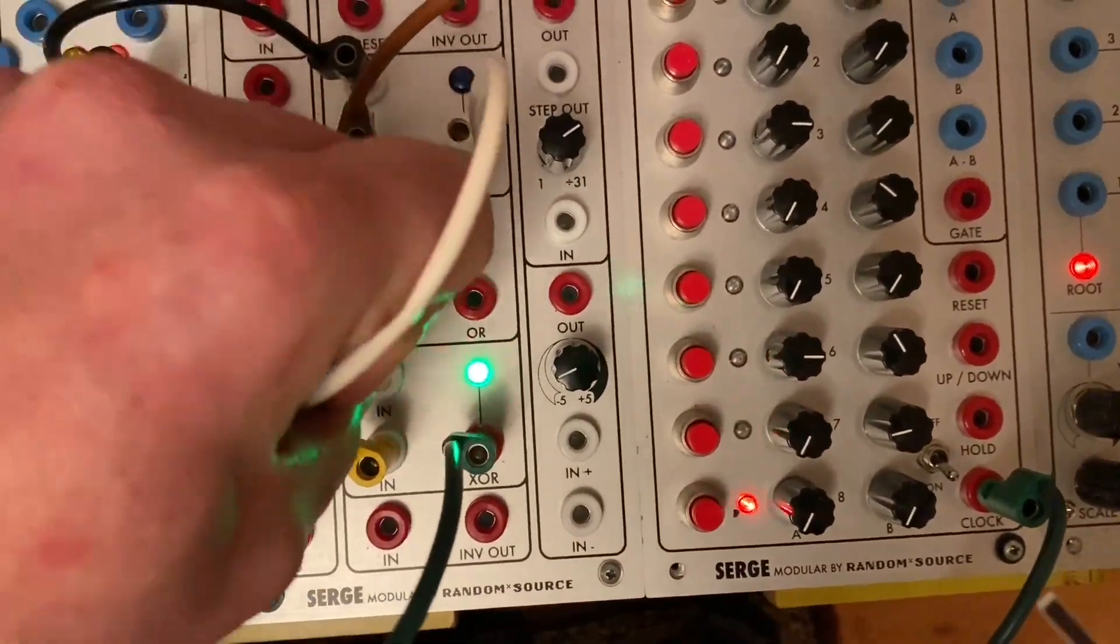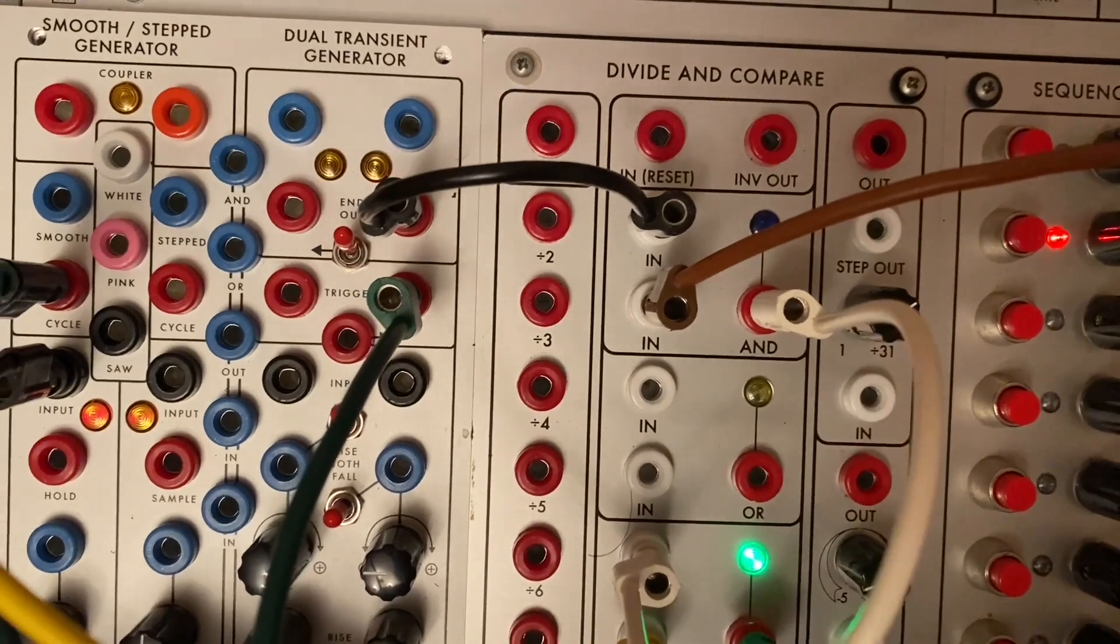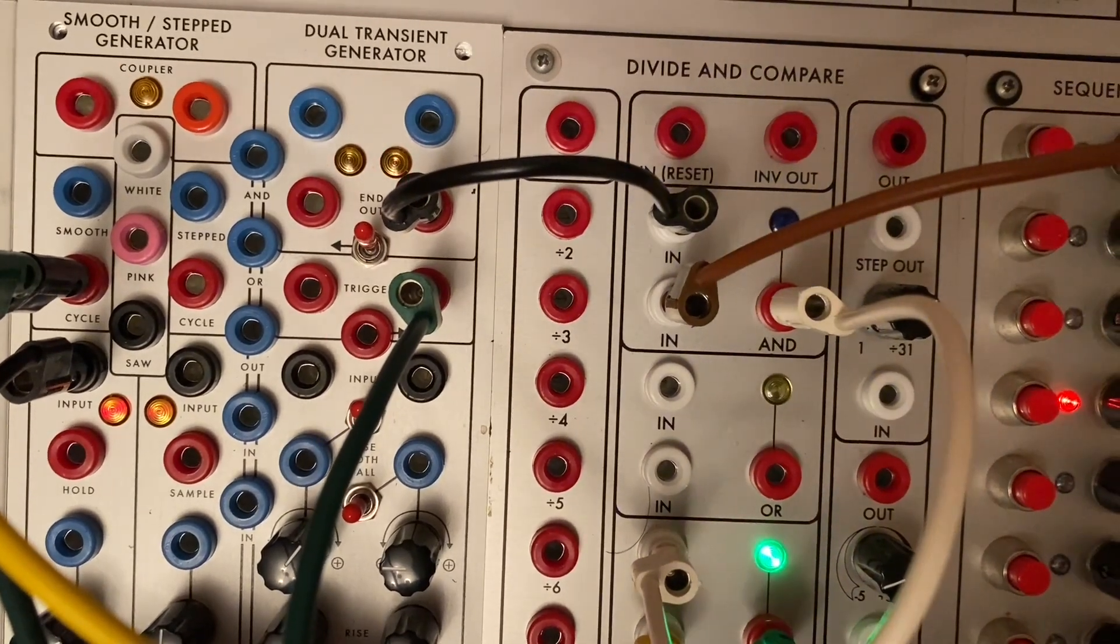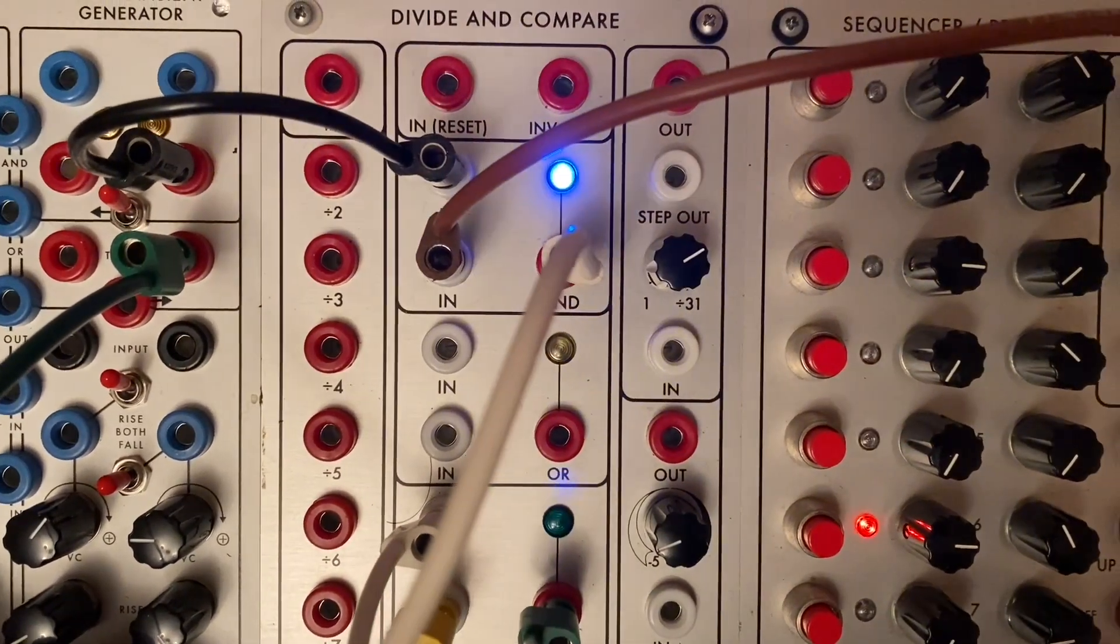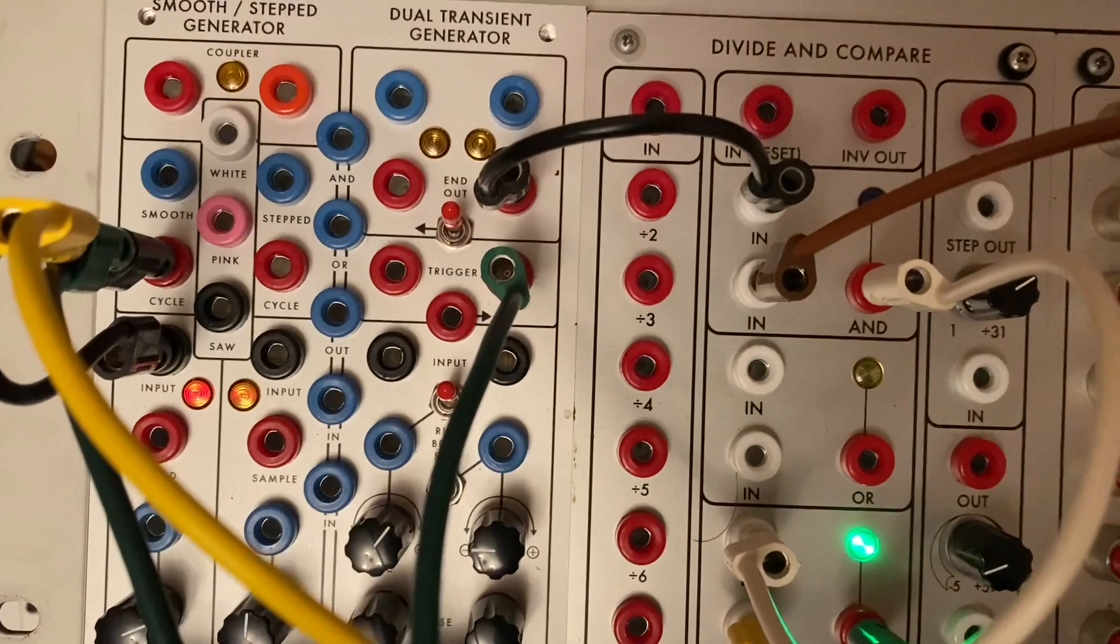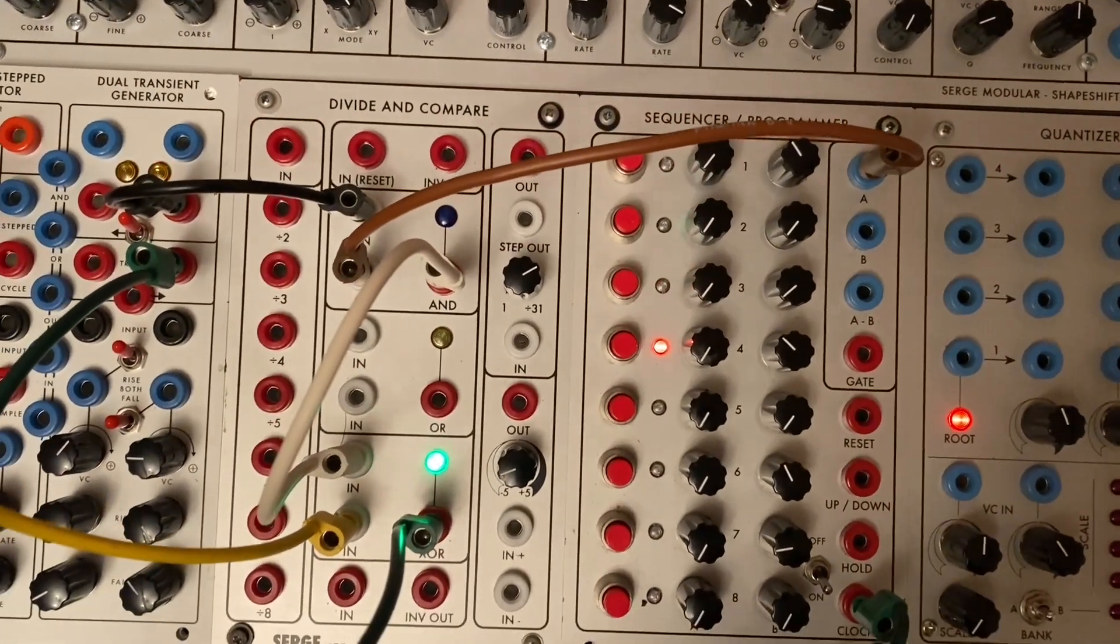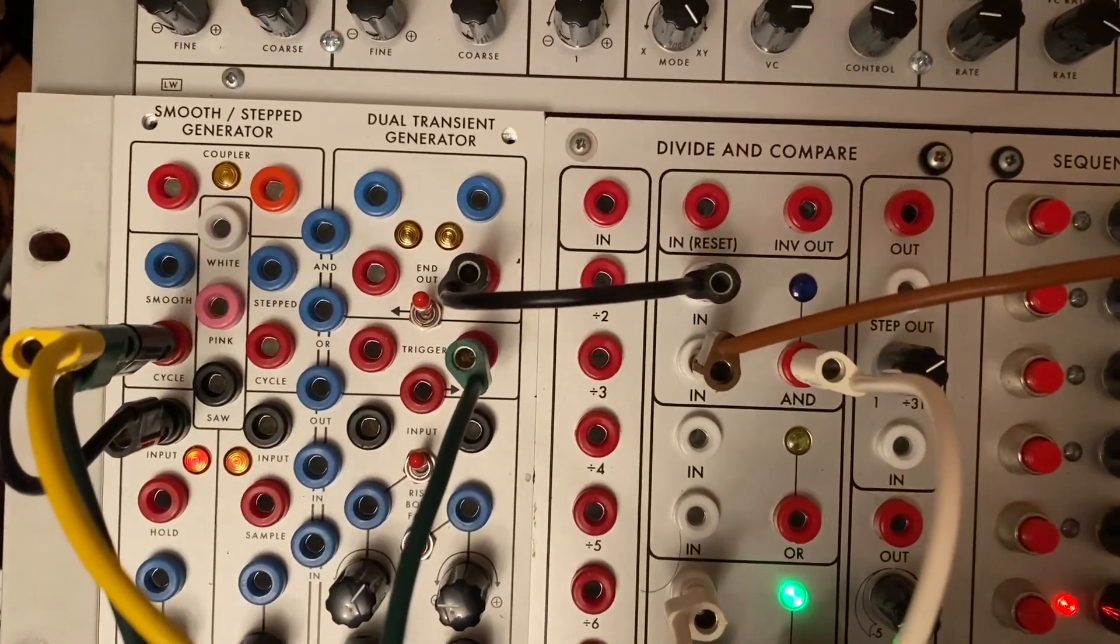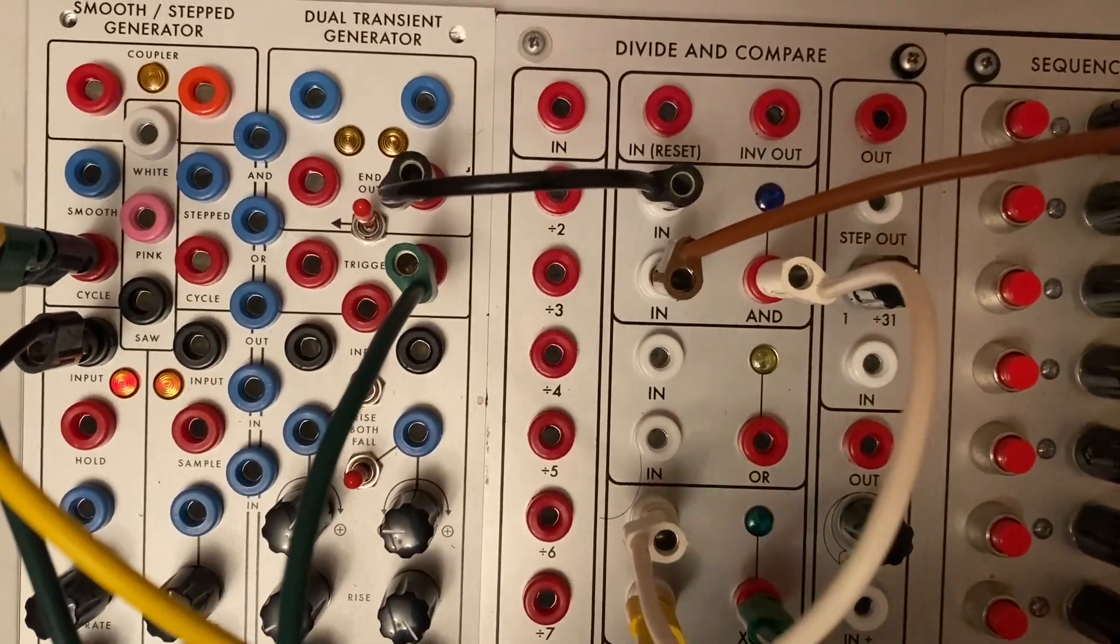But now we will patch the output of that AND into the other input of the XOR. If you look at the lights here, you'll see that on certain steps where there's a positive voltage we are completing the cycling loop. And on the steps where the sequencer's voltage passes the threshold for the logic module, the transient generator auto cycles. This works at both control voltage rates but also at the audible rate, which has the effect of basically having an oscillator that you can switch on or off, all in a controlled sequenced way.